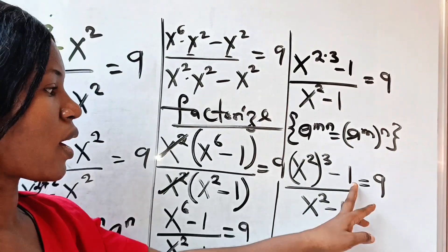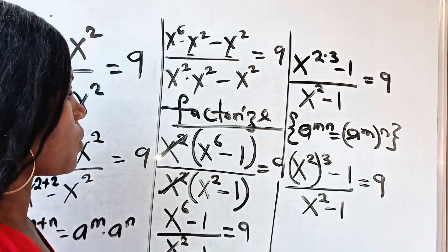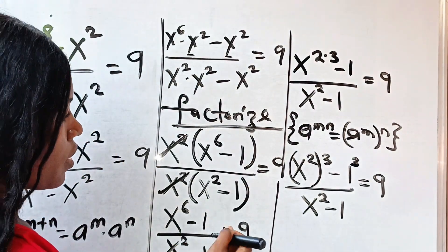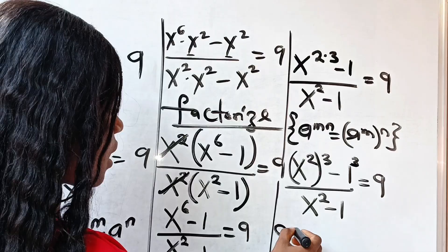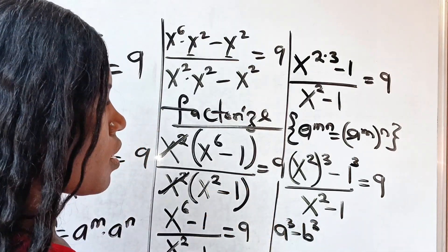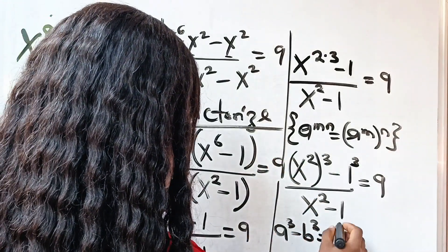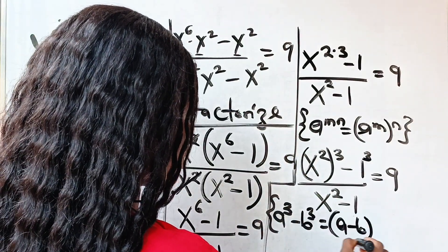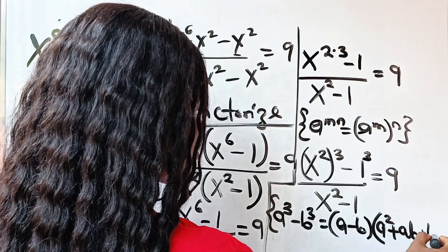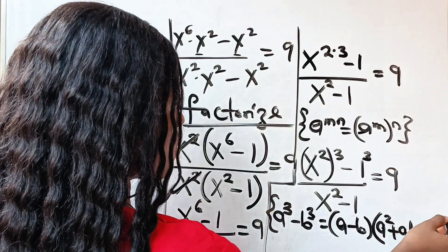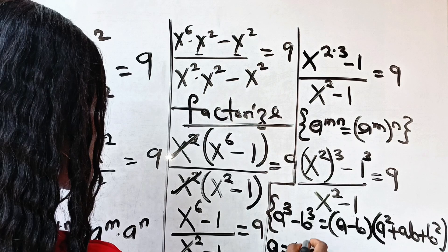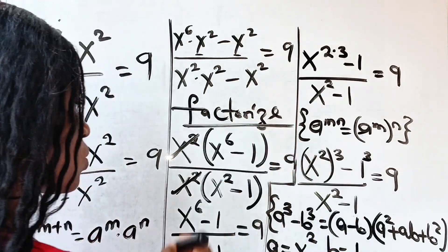Now we can write 1 as 1 to the power of 3 as well. Now remember that a to the power of 3 minus b to the power of 3 is equal to a minus b, multiplied by a squared plus ab plus b squared. In this case, our a is equal to x to the power of 2 and our b is equal to 1.